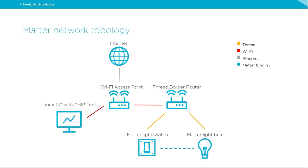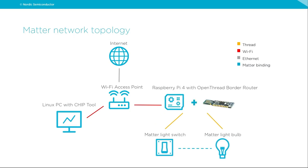Matter's relationship called binding solves this problem by allowing configuration of such connections using the Matter controller and persisting them on the device for future purposes. Let's introduce the real devices we will use for this setup. As a Matter controller, we will use a Linux PC with the chip tool application — a command line tool developed by the Matter SDK developers.